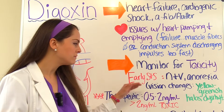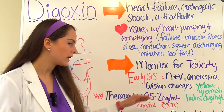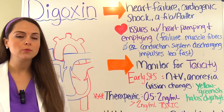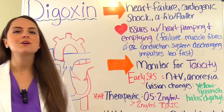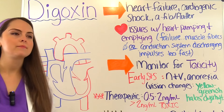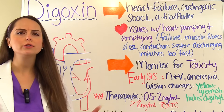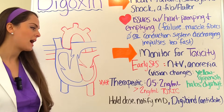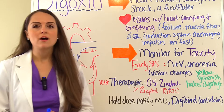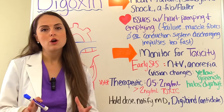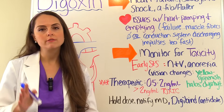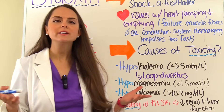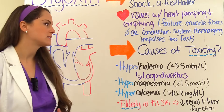The therapeutic range is 0.5 to 2 nanograms per milliliter. Anything greater than 2 is considered toxic. If you have a scenario where the dig level is high, your nursing action is to hold the dose and notify the MD. The antidote for digoxin — what can reverse it — is Digibind.